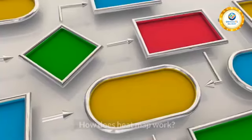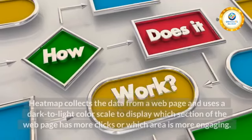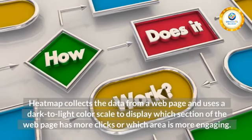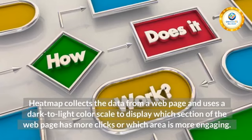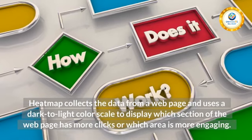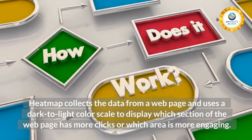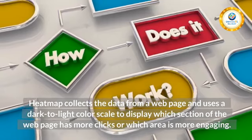How does a heatmap work? A heatmap collects data from a web page and uses a dark-to-light color scale to display which section of the web page has more clicks or which area is more engaging.